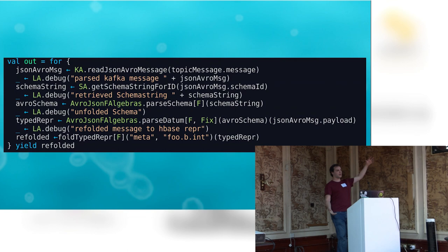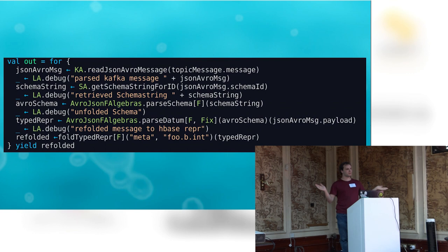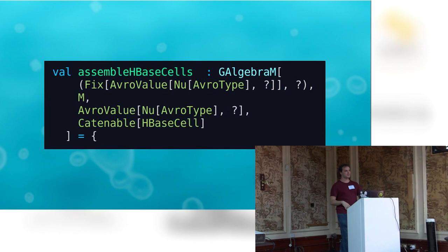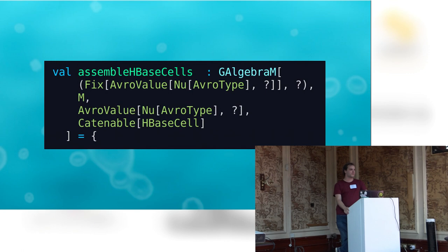We can't just put the Avro ADT directly into HBase; we have to encode it into what amounts to a binary map with a key and some number of cells, each having a name and a byte value. We pass in the key field we expect as well as the unfolded ADT. Inside this function there is an algebra, and this is really the meat of it. Recursion schemes are not the easiest technology to understand, but we heard about paramorphisms in the previous talk — and that's what's being used here, because paramorphisms give us access to the previously folded structure and allow us to inspect it for nested records.